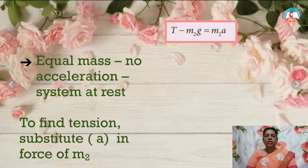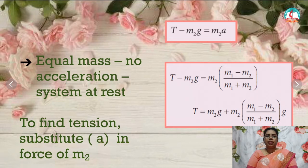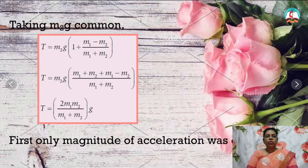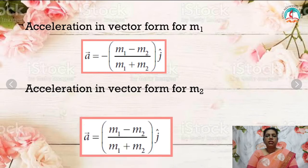To find the tension in the string, substitute the value of acceleration in the equation T minus M2g equals M2a. Substituting, T equals M2g plus M2 times (M1 minus M2) divided by (M1 plus M2) times g. Taking M2g outside: M2g times [1 plus (M1 minus M2) divided by (M1 plus M2)]. By multiplying, we finally get T equals 2M1M2 divided by (M1 plus M2), times g. The acceleration in vector form for M1 is: A-vector equals minus (M1 minus M2) divided by (M1 plus M2) times j-cap. And for M2: A-vector equals (M1 minus M2) divided by (M1 plus M2) times j-cap.